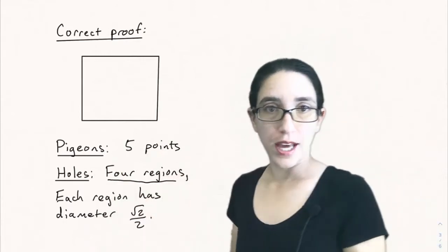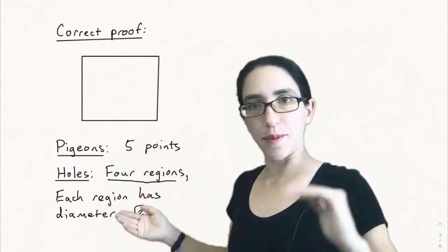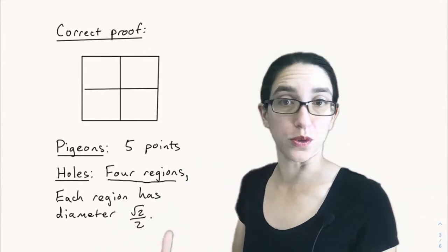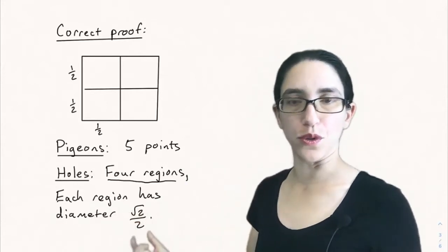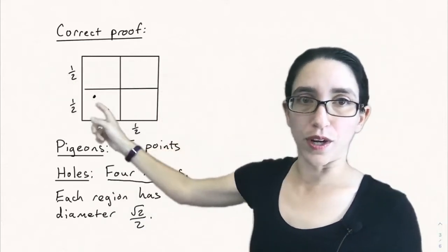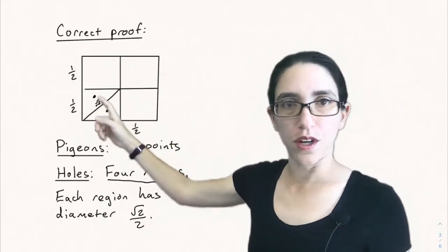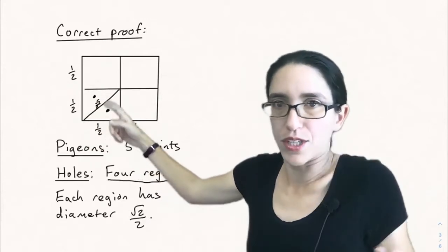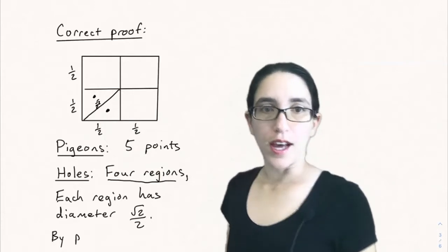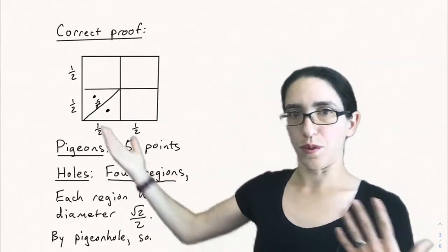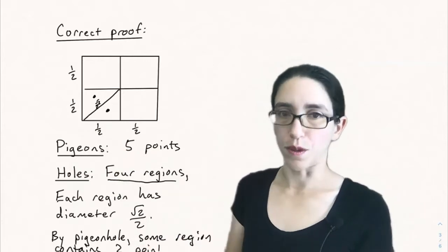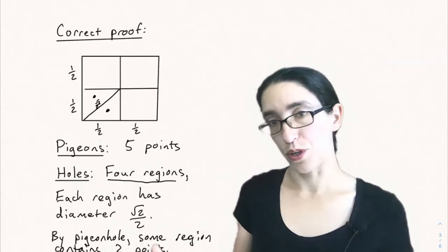The correct approach is to use the pigeonhole principle. We treat the five points as pigeons and divide the square into four regions — holes — so that if two points are in the same region, they're guaranteed to be at most square root of two over two apart. We want each region to have diameter square root of two over two, where diameter means the largest distance between any two points in that region. Dividing the unit square into four one-half by one-half squares achieves this. With five points and four boxes, by the pigeonhole principle some box contains at least two points, and any two points in the same box are at most square root of two over two apart.